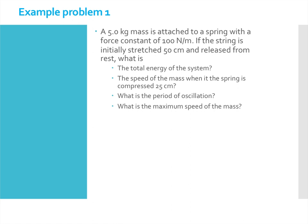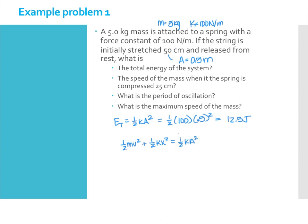Okay, in this problem we have a mass on a spring, mass is five kilograms, the k is 100 newtons per meter, and the amplitude is 0.5 meters. So first we want to find the total energy. And so that gives us 12.5 joules. Then it wants to find the speed of the mass when the spring is compressed 25 centimeters. This is a case where we're using conservation of energy, basically given a value of x what is the value of velocity?